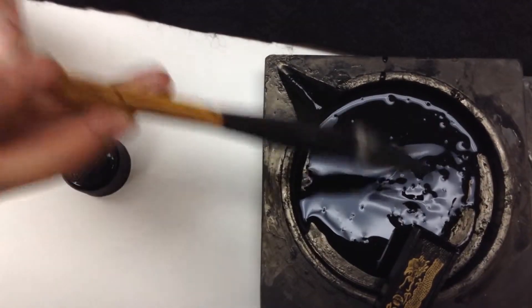I'll rub my ink stick onto the water and what that does is it crushes up the mo tiao, the ink stick, into particles that color the water.